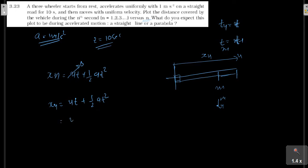And xn minus 1 equals ut plus 1/2 a times (t minus 1) square.